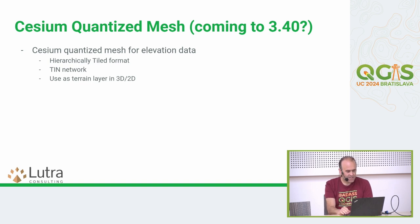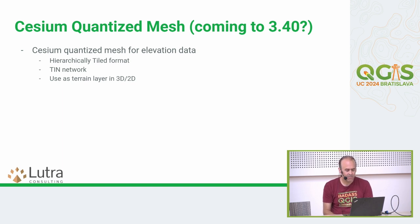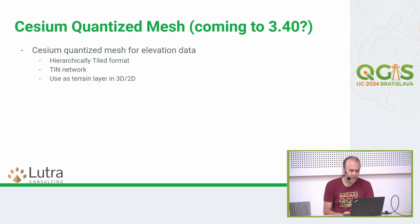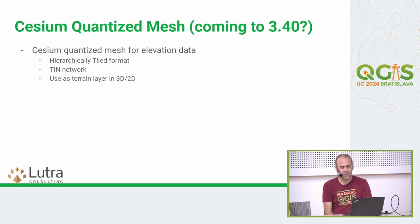Another feature that's almost ready is Cesium quantized mesh — a flexible format for serving elevation data as a tile format. You get to serve a triangulated network as an elevation layer in QGIS. Part of the work is already merged in QGIS master and there's a pending pull request for 2D and 3D rendering of the quantized mesh layers. Hopefully it will make it into 3.40.